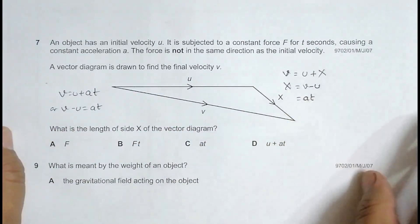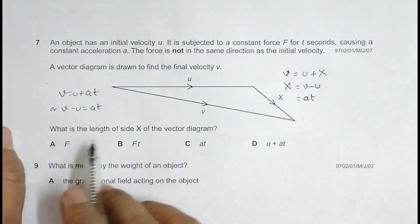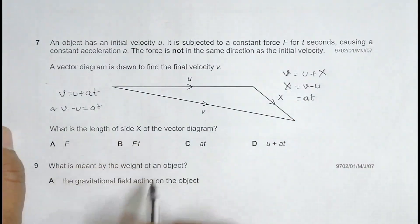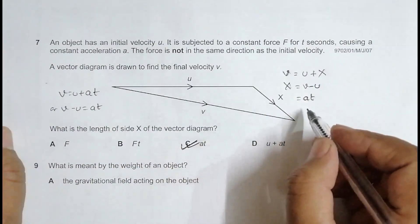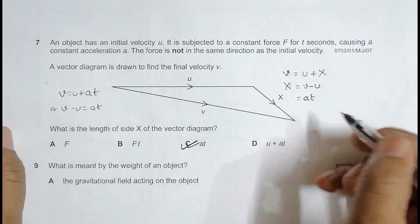So our answer choice is, if you go to the figure, answer choice should be choice number C. So, quantity X should represent the product of acceleration and the time of the body.